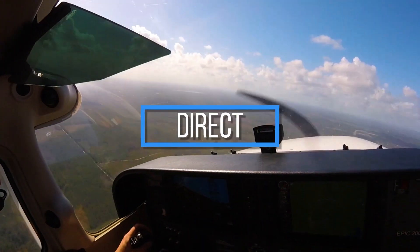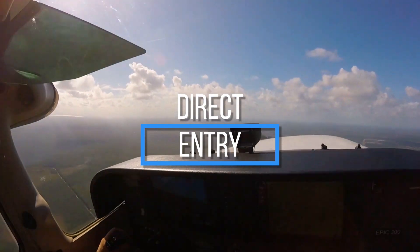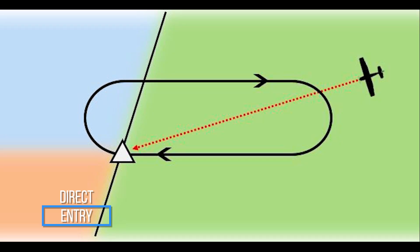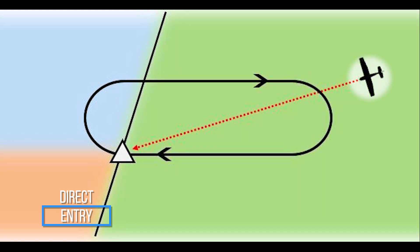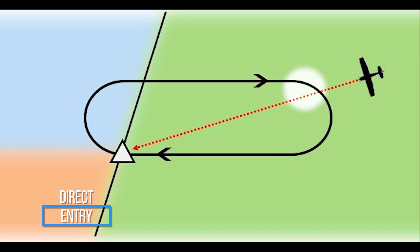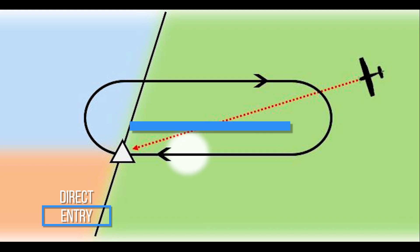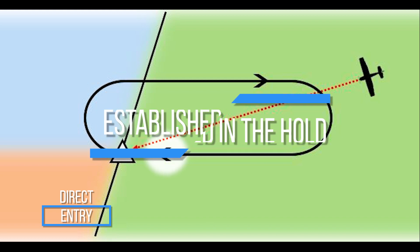Direct Entry: When approaching the holding fix from anywhere in the green shaded region, the direct entry procedure should be conducted. The pilot would fly directly to the fix and turn to follow the holding pattern. Once reaching the fix, the pilot begins a standard rate turn in whichever direction assigned by air traffic control. Once initially passing the fix, the pilot should notify air traffic control that they are established in the hold.